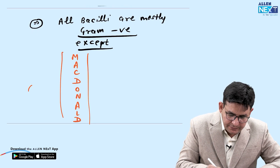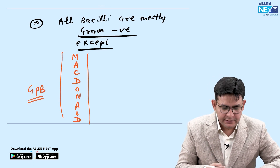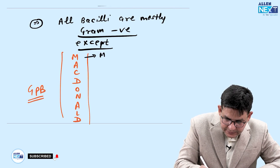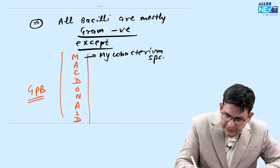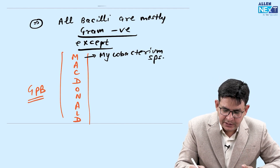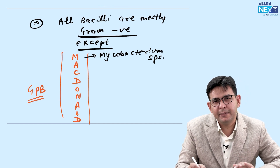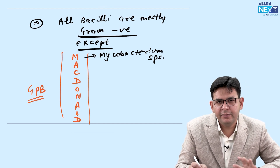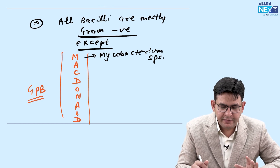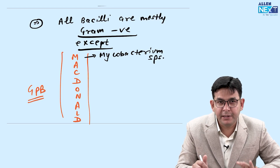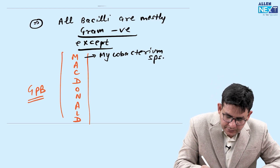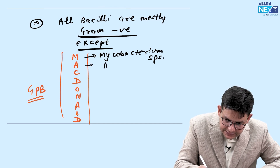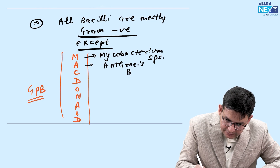The MCD gram-positive bacilli: M is Mycobacterium species. Mycobacterium includes TB, atypical mycobacteria, and Mycobacterium bovis. Now you might say we've learned in practicals they are acid-fast — very right, they are acid-fast, no doubt. But if you stain them by Gram stain only, they take up gram-positive staining.